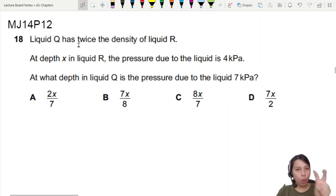Liquid Q has twice the density of liquid R. At a certain depth, the pressure due to liquid is 4kPa. At what depth in liquid Q is the pressure due to the liquid 7kPa?